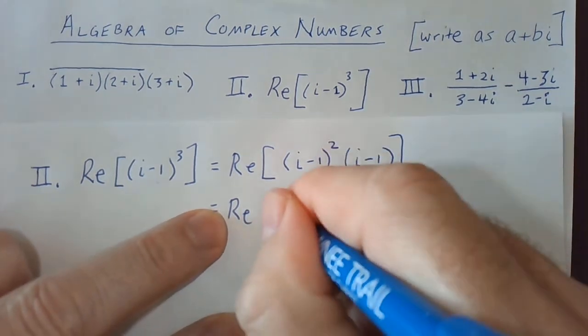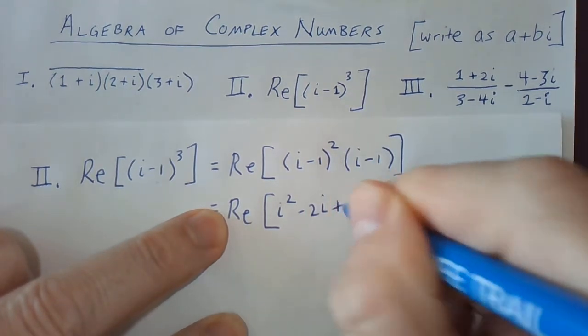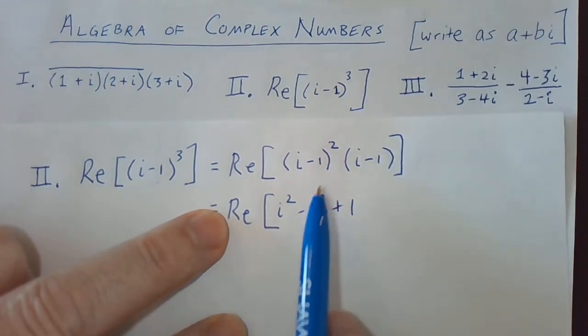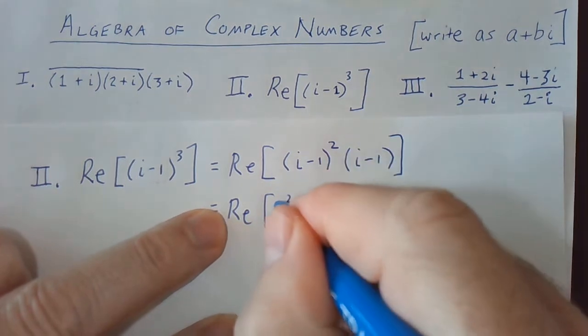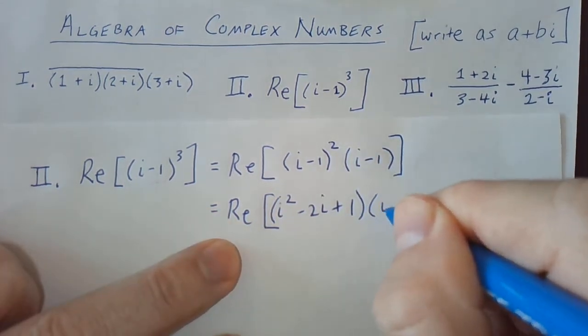If I square this, I'm going to get i squared minus 2i plus 1. And I'll simplify that and then multiply it by i minus 1.